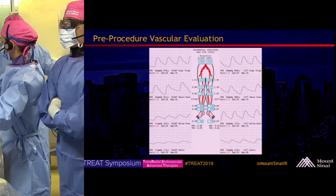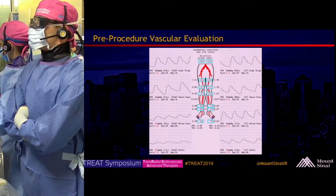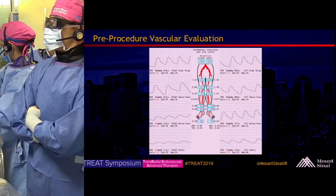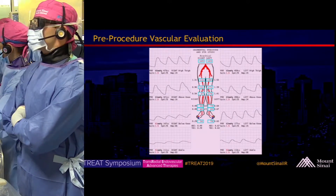ABIs and TBIs are listed. On the right side, the ABI is 0.49. The TBI is even worse at 0.29.